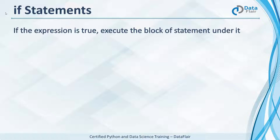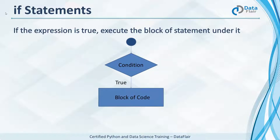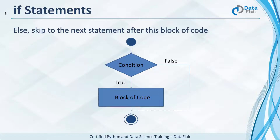Observe the flow. It reaches the condition. If this is true, it executes the block of code, then moves to the next statement. If, however, it was false, it does not execute the block of code under it and skips to the statements after it.